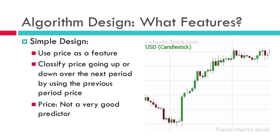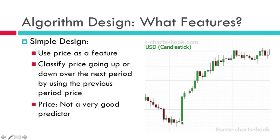So the first thing we want to do when designing a strategy is: what features do we use? A very simple classification algorithm I've tested is just using the price as a feature, or maybe the return over the last period of time. So say we come here and ask what's the price, and the algorithm says based on the price I think it's going to go up — so it enters a position here and we made profit. But that was just lucky, because price is not a good predictor at all.